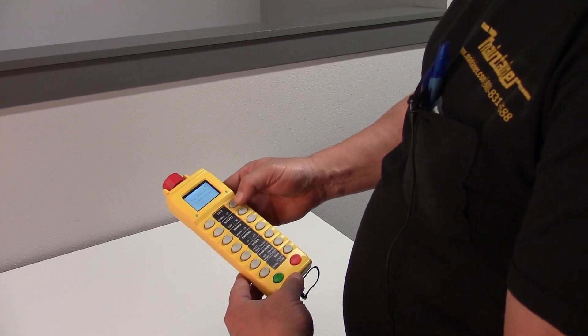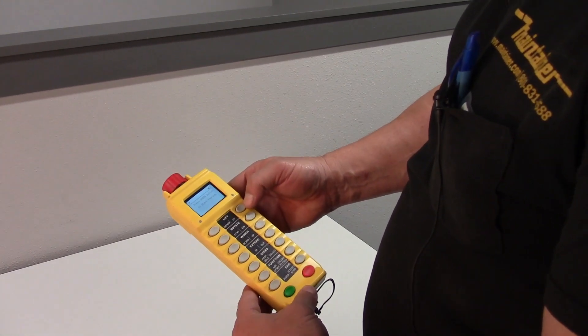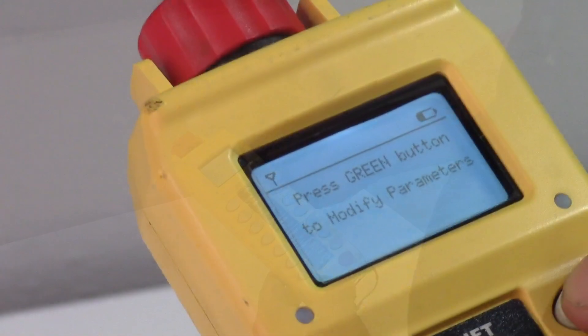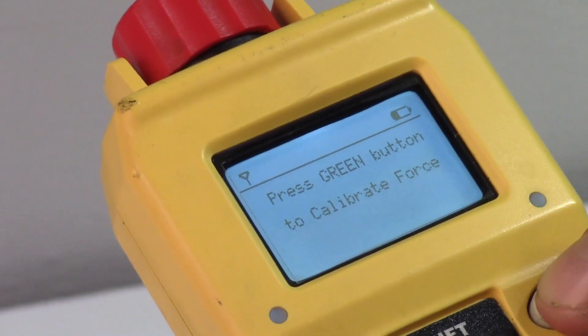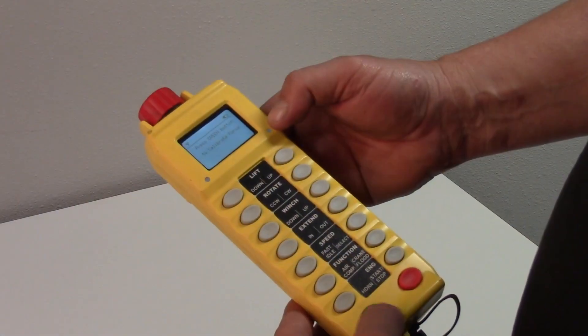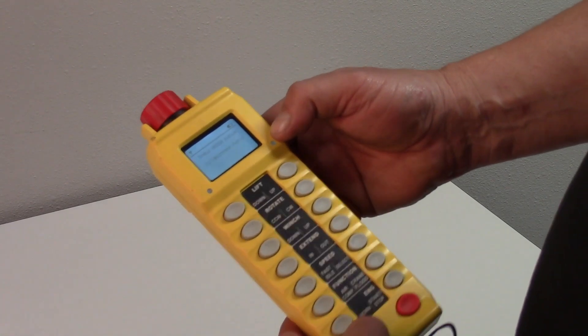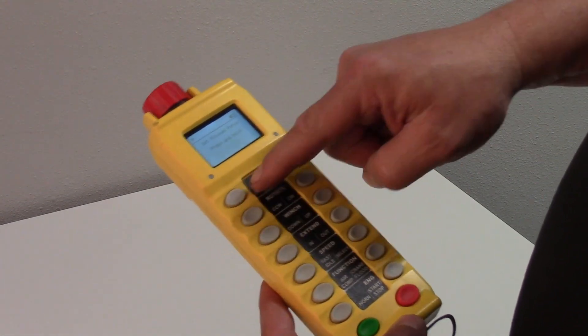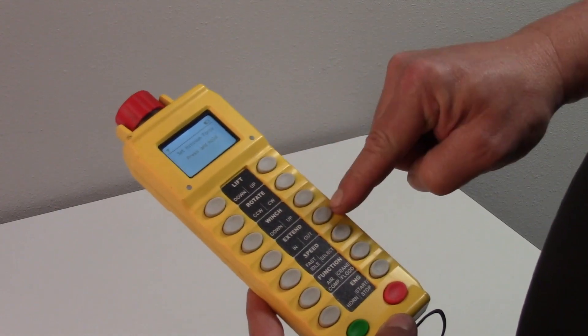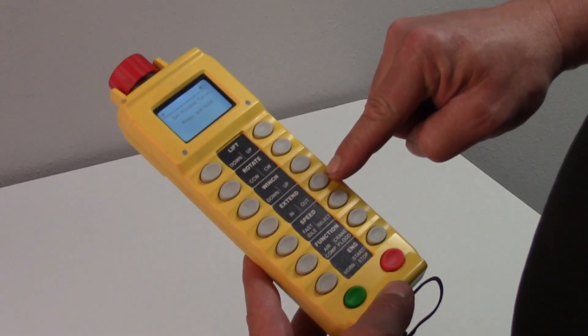Push the lift up button to change pages on the screen. So we're gonna calibrate force. Push the green button to start the calibration and we can do all eight crane functions individually.